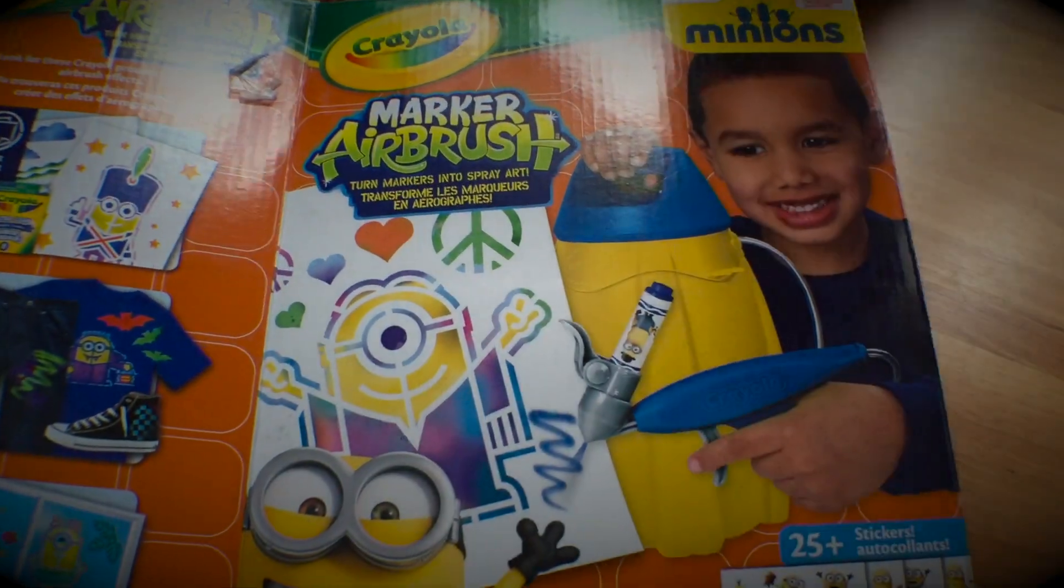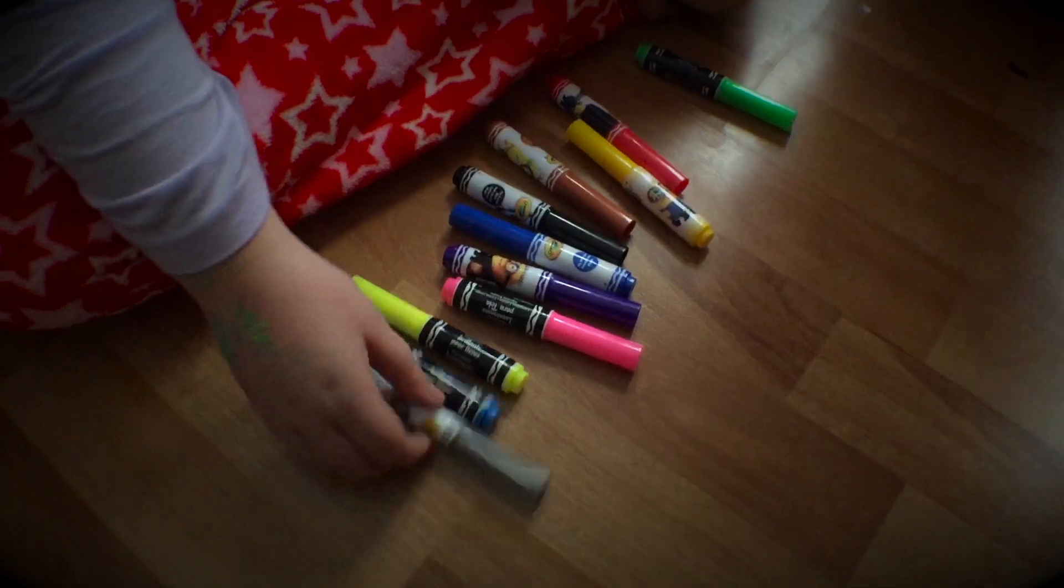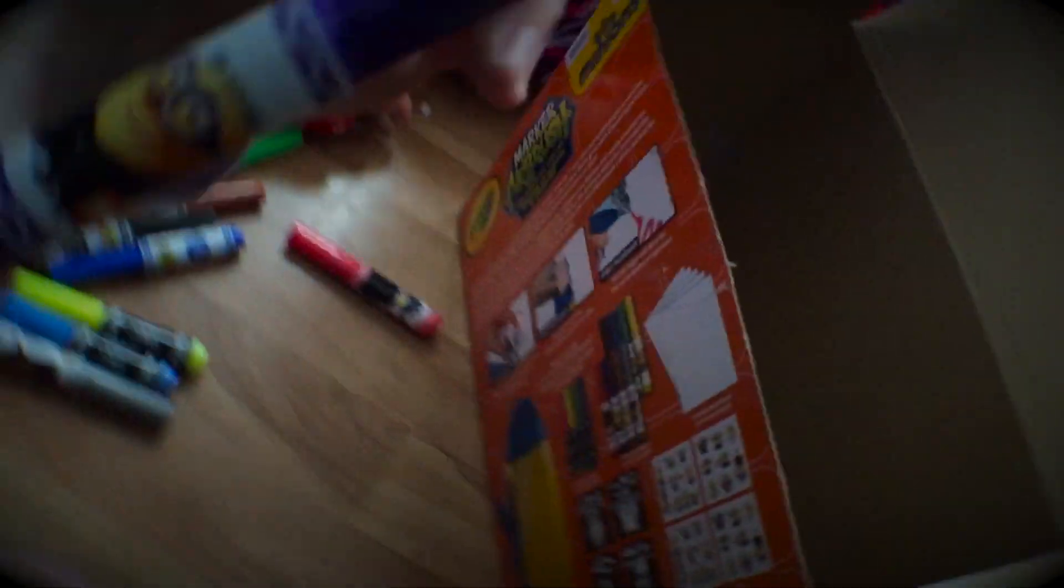So this is what it comes with. You've got a bunch of markers. No, all those markers actually came with a set. Minions markers. Yeah. Oh, that's pretty good. Look at this one. Bob's eyes. Yeah, but these markers are different because of these. This is Bob.